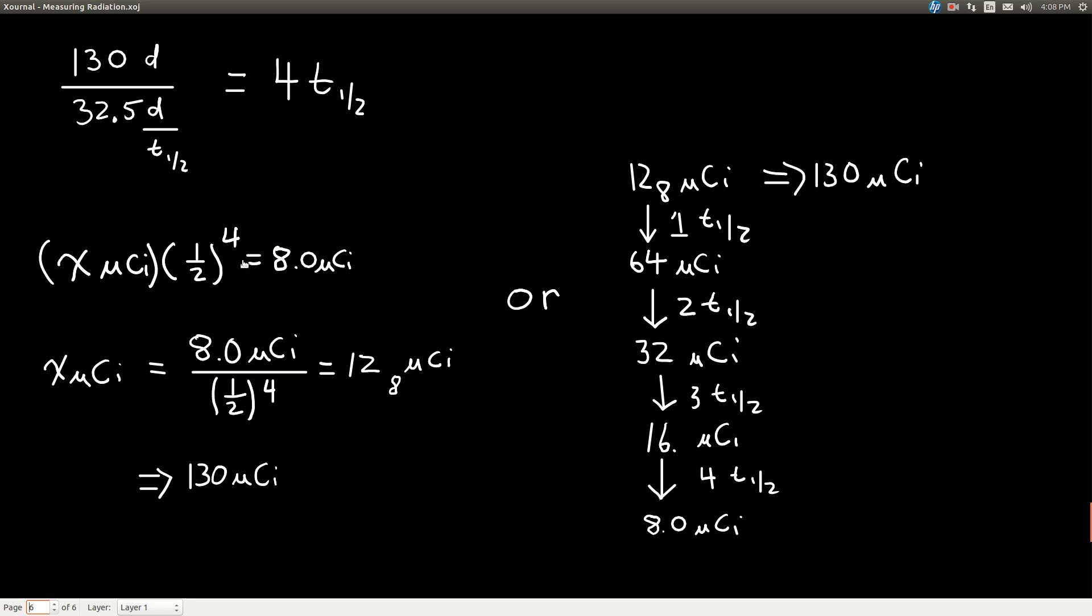Or we can use the formula just like we did on the other problem. If we take the initial activity times one half raised to the power of however many half-lives have gone by, that's equal to how much we have left, the current activity. In this case, we're solving for the initial activity. And the problem that we did before, we solved for how much was left.